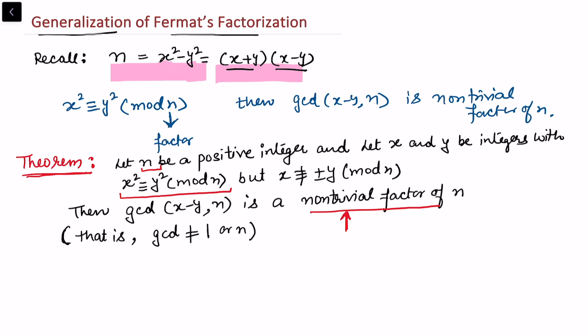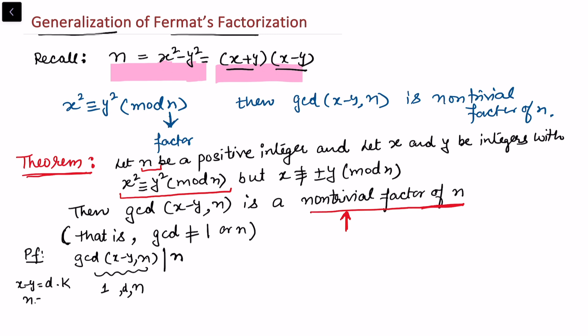The theorem states: let n be a positive integer we wish to factor, and let x and y be integers such that x squared is congruent to y squared mod n, but x is not congruent to plus or minus y mod n. Then the gcd of (x minus y) and n is a non-trivial factor of n. Non-trivial means the gcd should not be 1 or n — if we get a non-trivial gcd, that will be a factor of n.